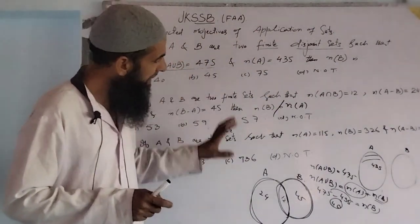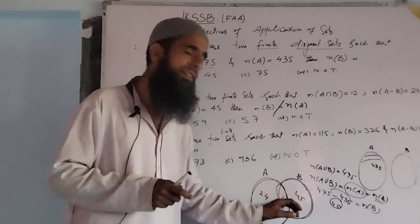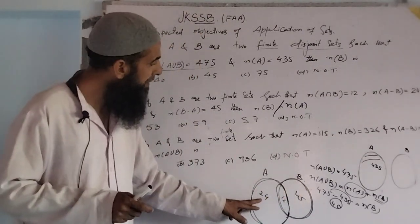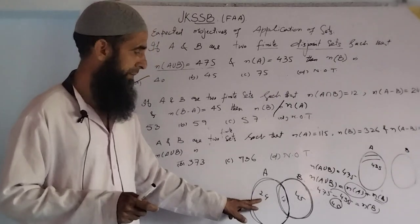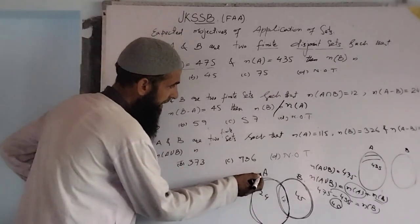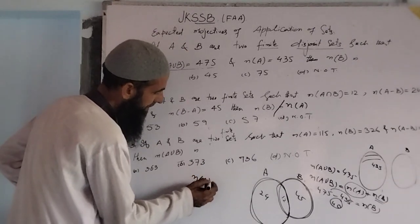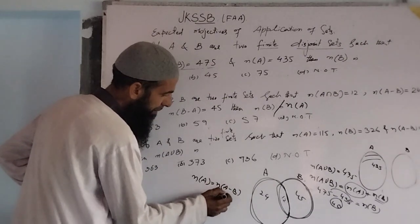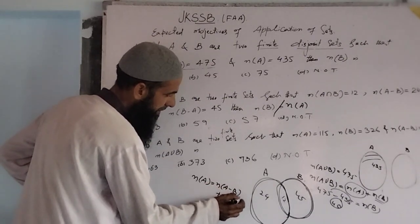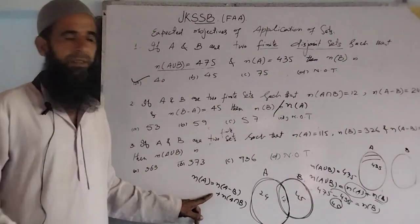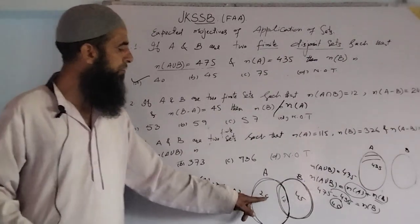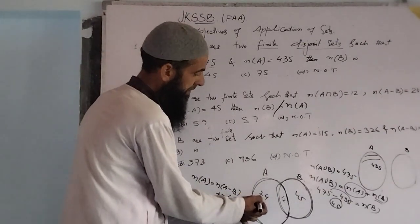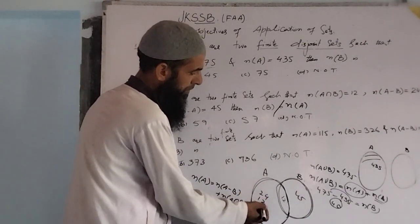Simply add the number of elements in the intersection with the number of elements in A minus B. For example, to find all elements of A, the number of elements in A is always equal to number of elements in A minus B, plus number of elements in A∩B. So: number of elements in A minus B is 24, and number of elements in their intersection is 12.